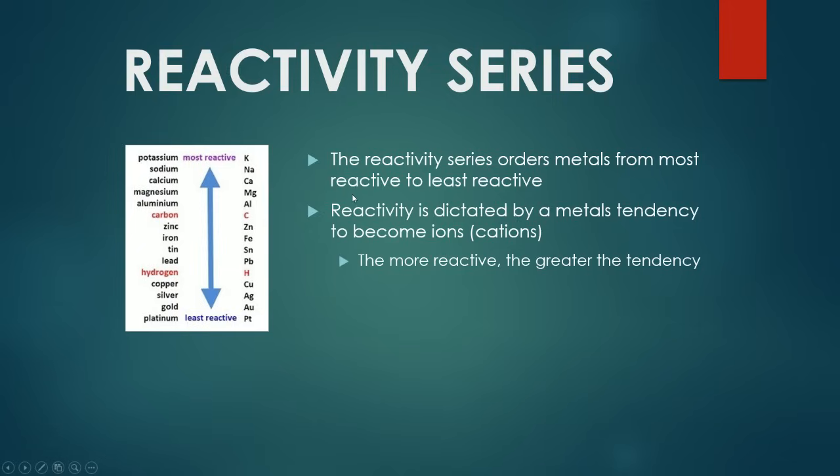One of the key topics of this part of the syllabus is the reactivity series, which is basically a list that orders metals from the most reactive to least reactive, and you've got carbon and hydrogen in here as well. They're obviously not metals, but they're included in this list. We need to think about what is reactivity. When we talk about metals, reactivity is dictated by a metal's tendency to become ions, or cations. The more reactive a metal is, the greater the tendency the metal has to form metallic ions.